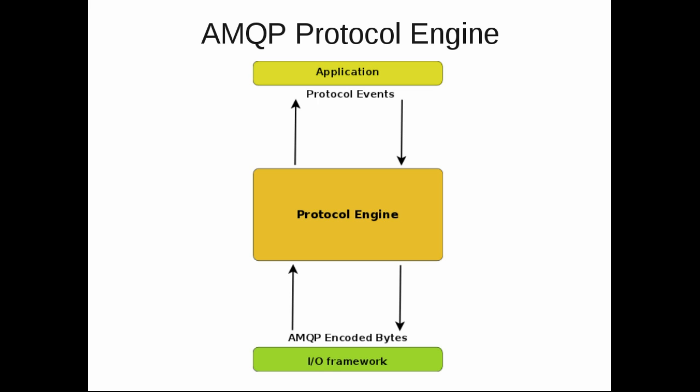Let's briefly look at how the protocol engine works. When you feed the engine with an MQP encoded byte string, the engine will generate protocol events that update the state of the various protocol objects — like connections, sessions, links, etc. — which the application will be able to see. When the application in turn updates the state of these protocol objects, the engine will generate an MQP encoded byte string as output. Your application will be working with the top half of the engine, while your I/O framework would be working with the bottom half.